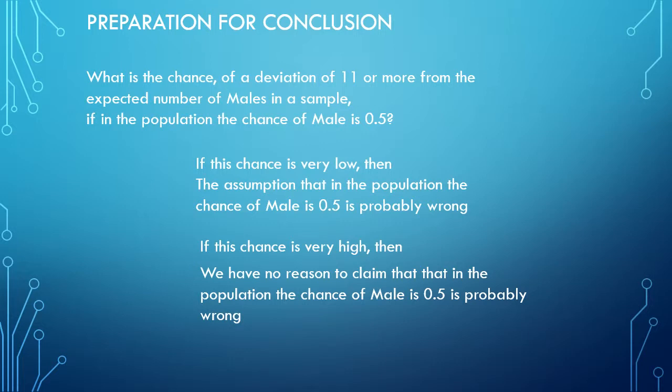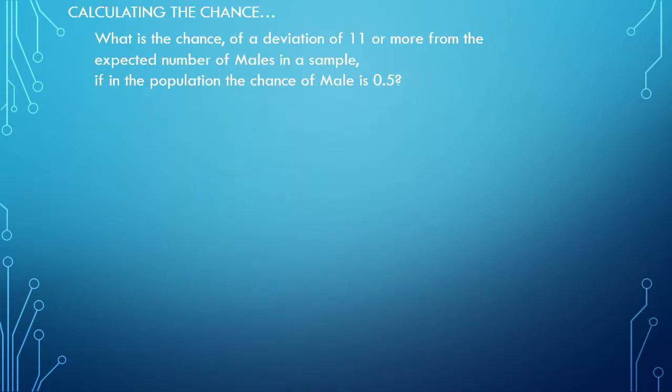So we never actually accept the 0.5 as being true; we only can disregard it if the chance is extremely low. So to calculate this chance there are a few different ways. I'm not going to show you how to do all of these in this video; I have separate videos for those.